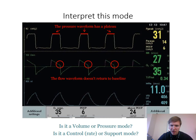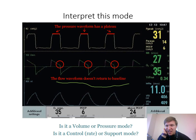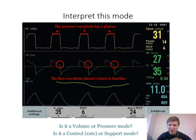To identify the mode: if the pressure waveform has a plateau and the inspiratory flow rate does not return to baseline — note it's the inspiratory flow rate, not expiratory — that indicates pressure support mode. The pressures are even throughout the whole breath and the inspiratory flow rate circled there is not reaching baseline. That's what tells you this is pressure support mode.